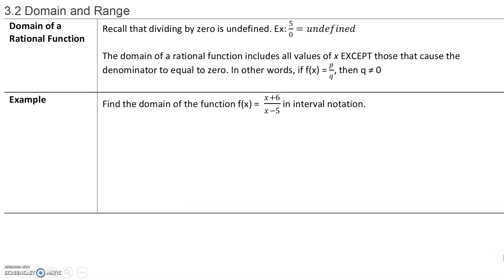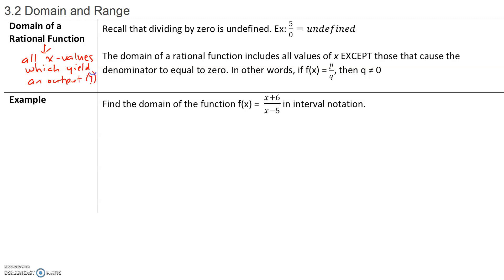In section 3.2, we will start talking about domain and range. Recall that the domain of a rational function is the set of all x values which yield an output or a y value. The domain of a rational function, specifically, is the set of all x values which yield a y value or an output.